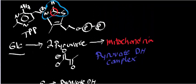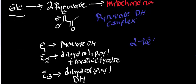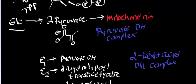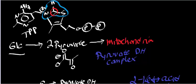The pyruvate dehydrogenase complex is part of a larger family called the alpha-ketoacid dehydrogenase complexes. All enzymes in this family share the same mechanism and cofactors. When we do the TCA cycle, we'll run into the alpha-ketoglutarate dehydrogenase complex. There are also important complexes for alpha-ketoadipate and branched-chain alpha-ketoacids generated from isoleucine, valine, and leucine catabolism. The only difference between family members is the substrates they bind.